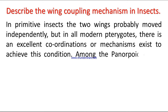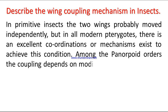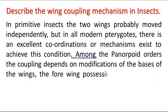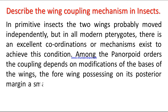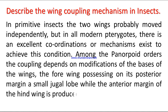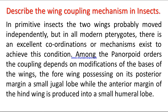Among the panorpoid orders, the coupling depends on modifications of the bases of the wings. The fore wing possesses on its posterior margin a small jugal lobe, while the anterior margin of the hind wing is produced into a small humeral lobe.